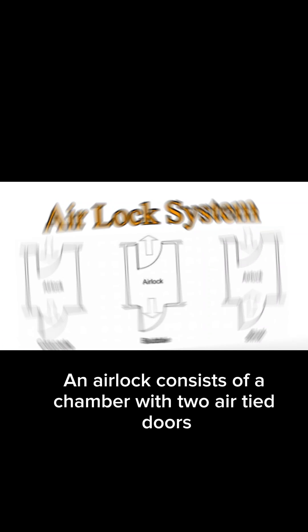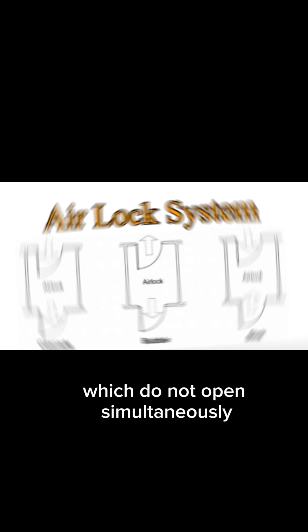An airlock consists of a chamber with two airtight doors or openings, usually arranged in series, which do not open simultaneously.